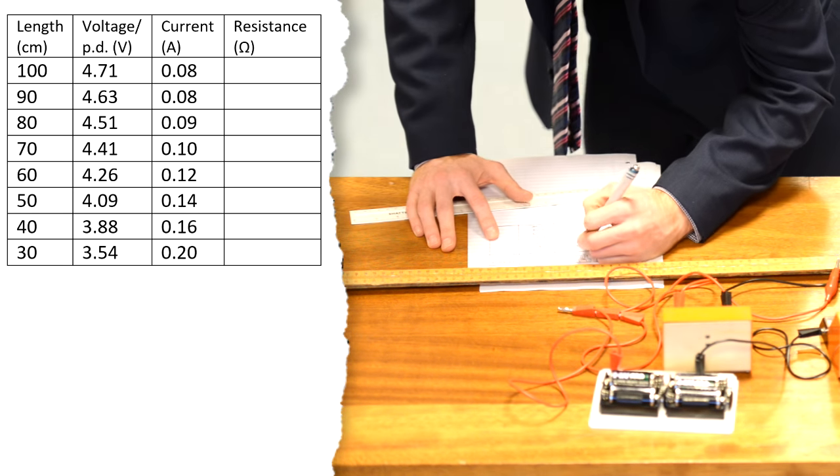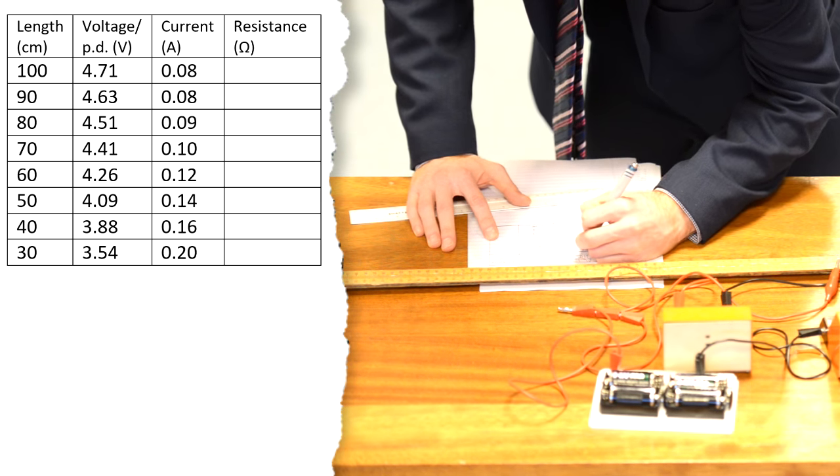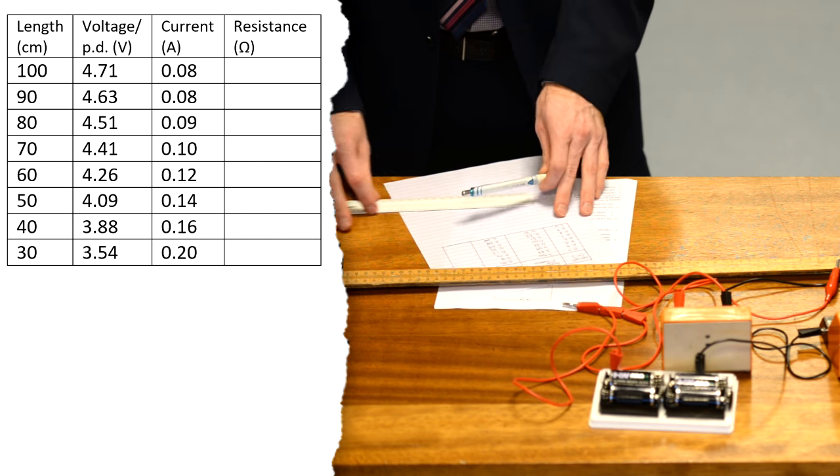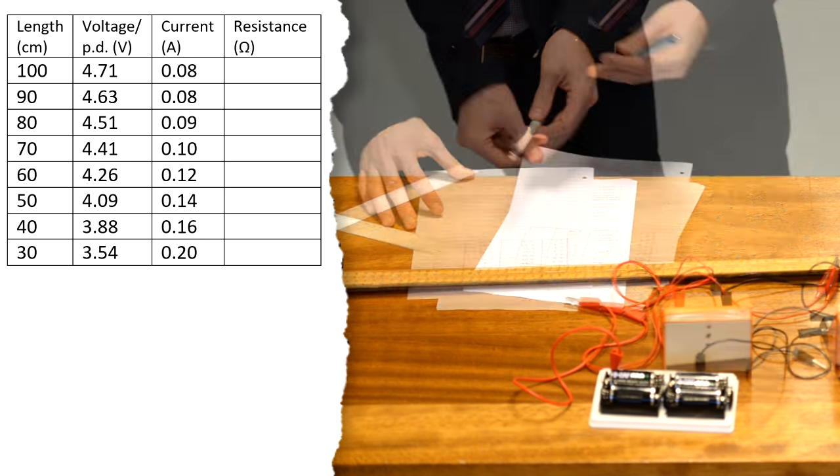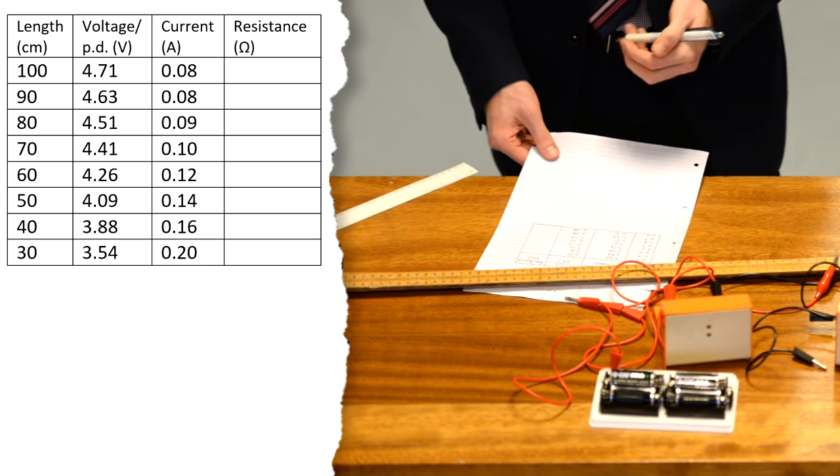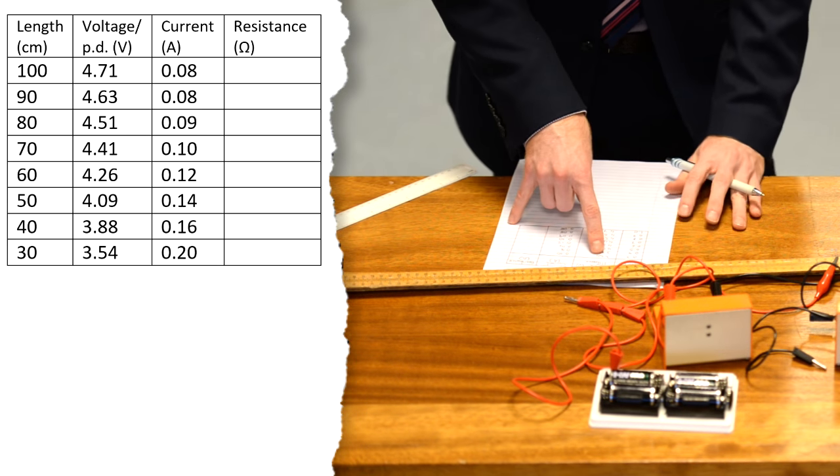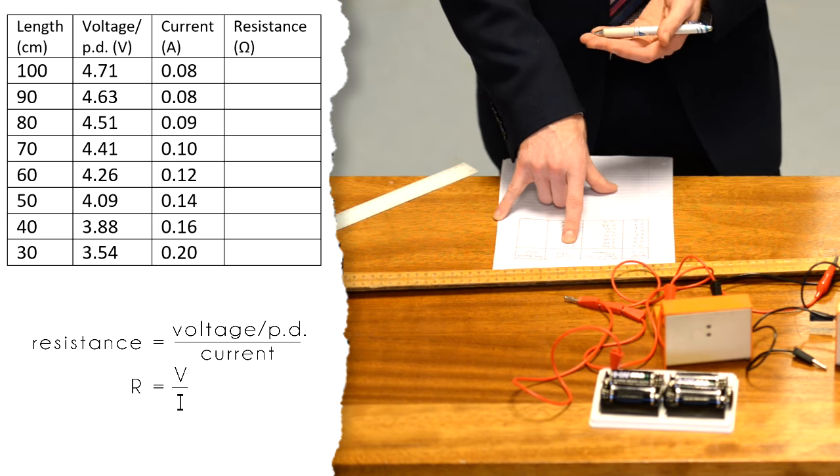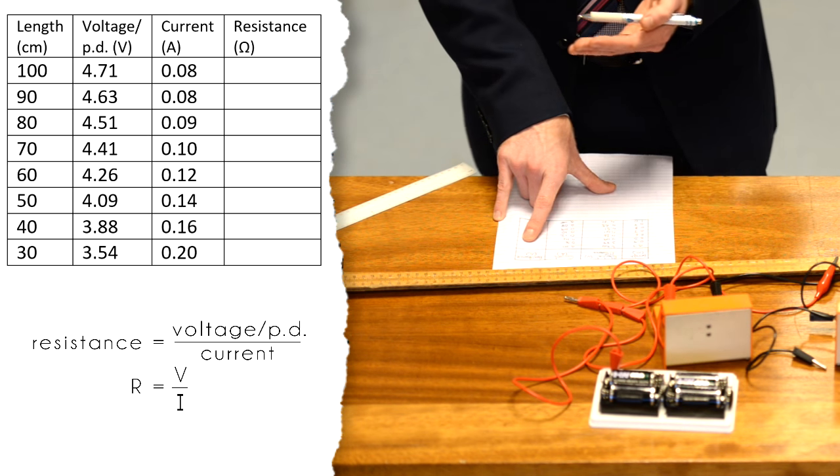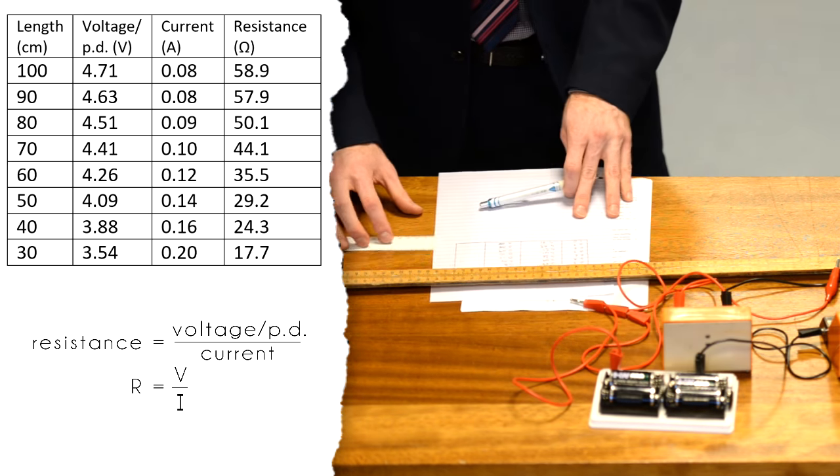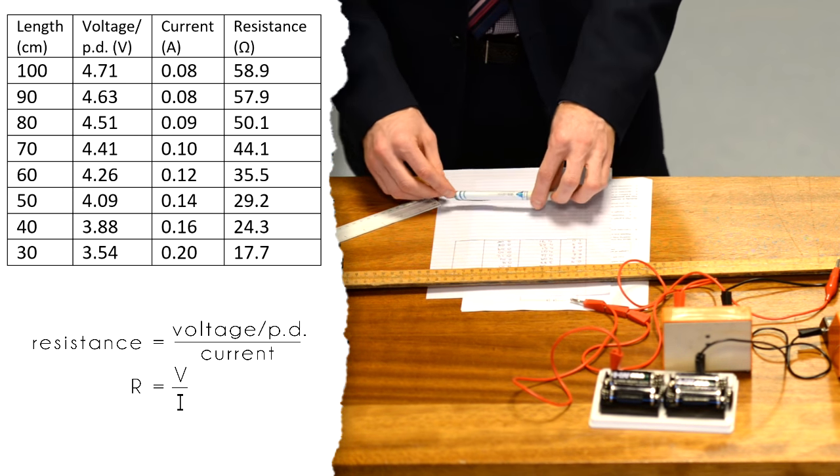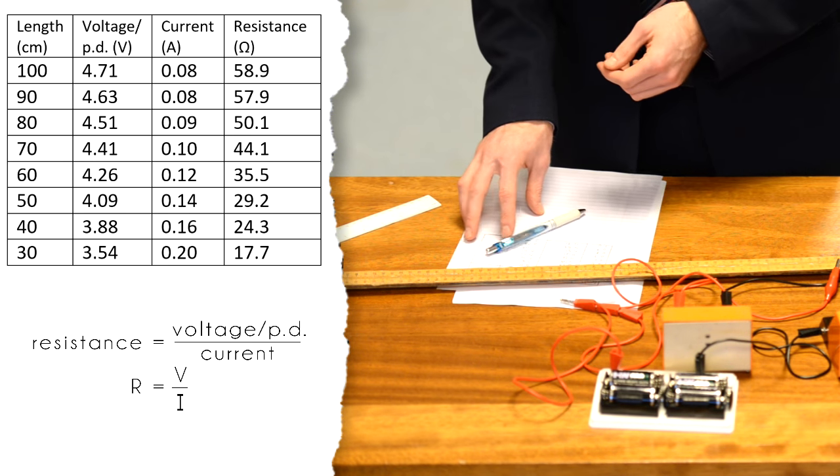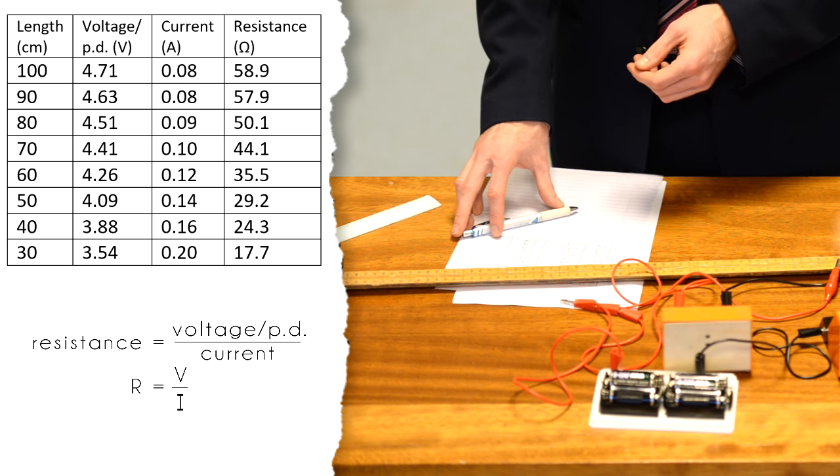All that follows from there is to calculate for each length the resistance of the wire. To calculate the resistance for each length of wire we need to take the two readings we've got and divide the potential difference by the current following Ohm's law. That will give us the resistance at that length, and once we have the resistance at each length of wire we can then plot a graph of resistance against length to see the relationship between the two.